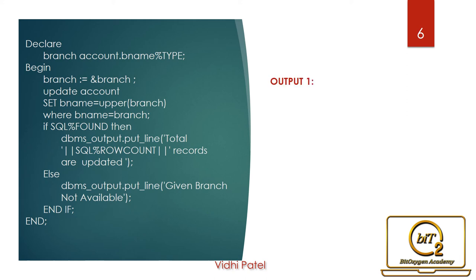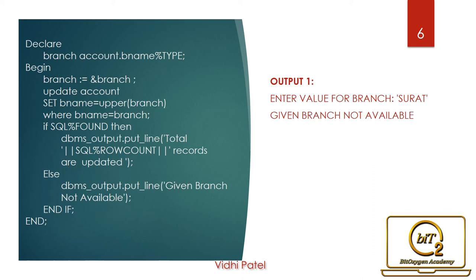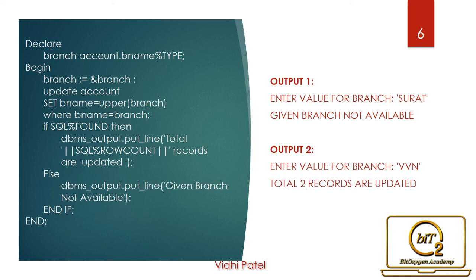Let's see the output. If we enter 'surat' as a branch name, which is not available in the account table, it returns that the given branch is not available. If we enter 'vbn' as a branch name, it returns that a total of two records are updated, because there are two records in the account table having 'vbn' as the branch name.